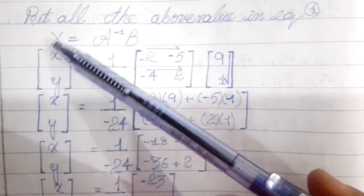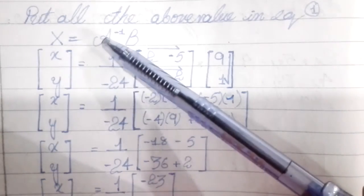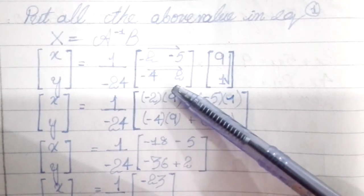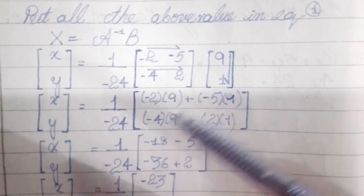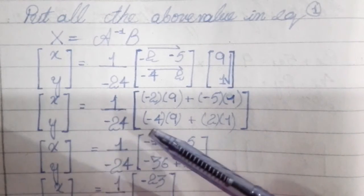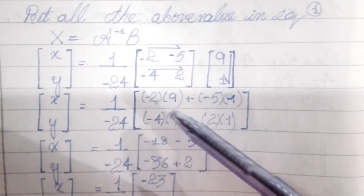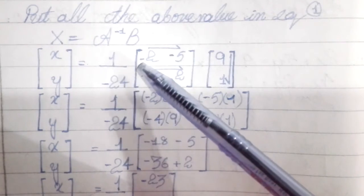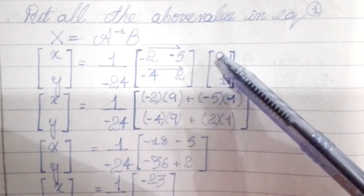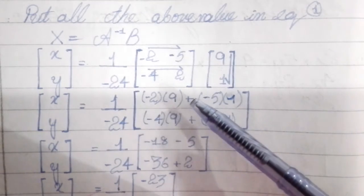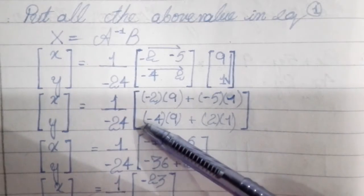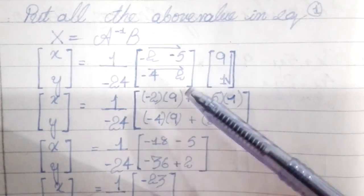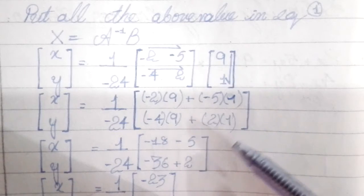Where X equals A inverse and B equals the B matrix. We will start the solution: minus 2 into 9 plus minus 5 into 1, minus 4 into 9 plus 2 into 1.